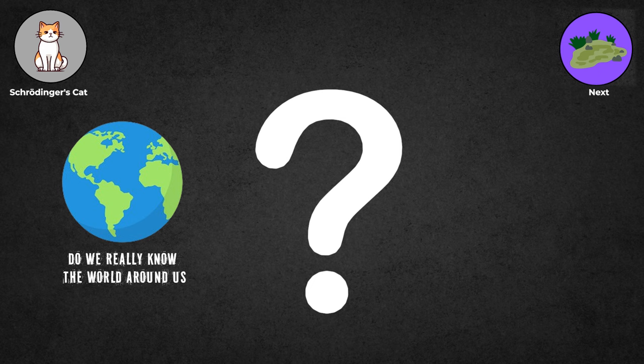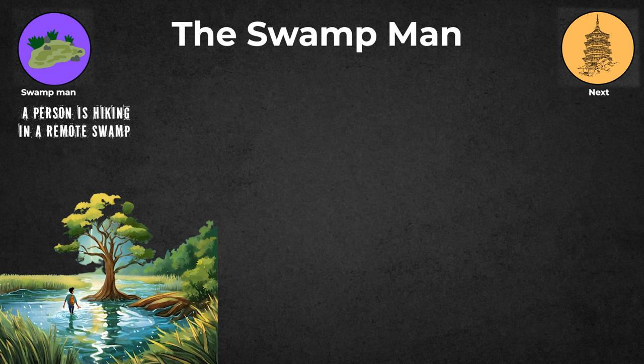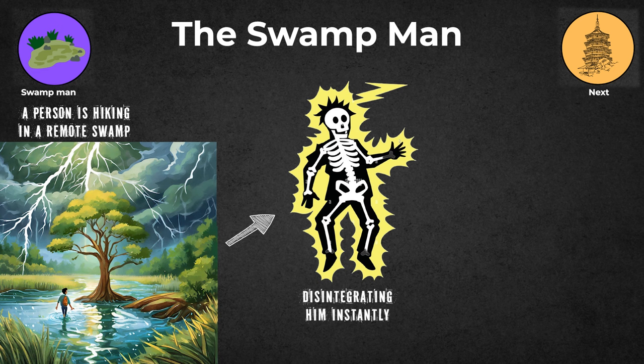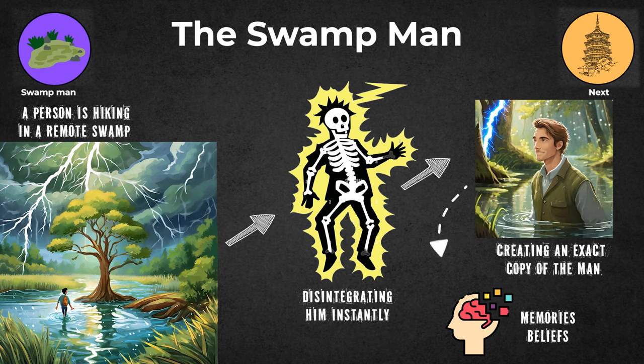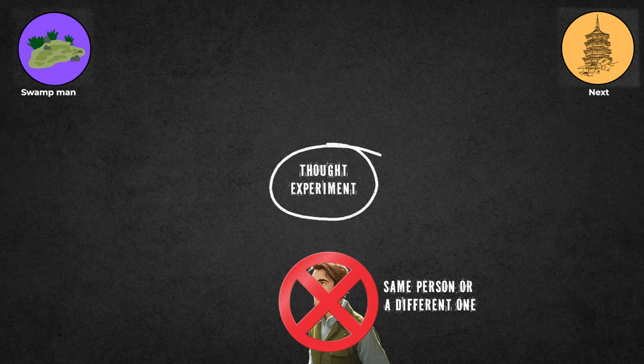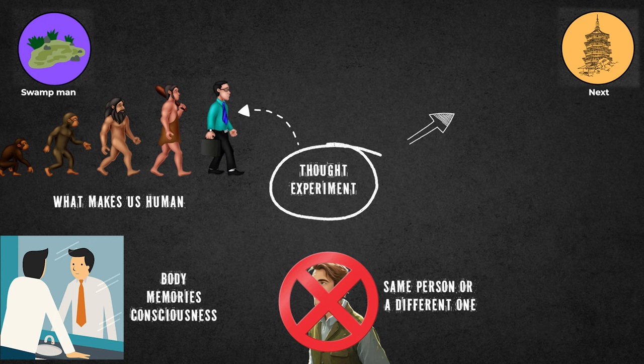The Swamp Man: This thought experiment envisions a scenario where a man is hiking in a remote swamp when a lightning bolt strikes a tree, disintegrating him instantly. Simultaneously, another bolt of lightning hits the marsh, creating an exact copy of the man, including all his memories and beliefs. Is this new copy the same person as the original or a different one? The Swamp Man test pushes us to rethink what makes us human. It asks if our body, memories, and consciousness define who we are, and if identity comes from within or is shaped by external events.